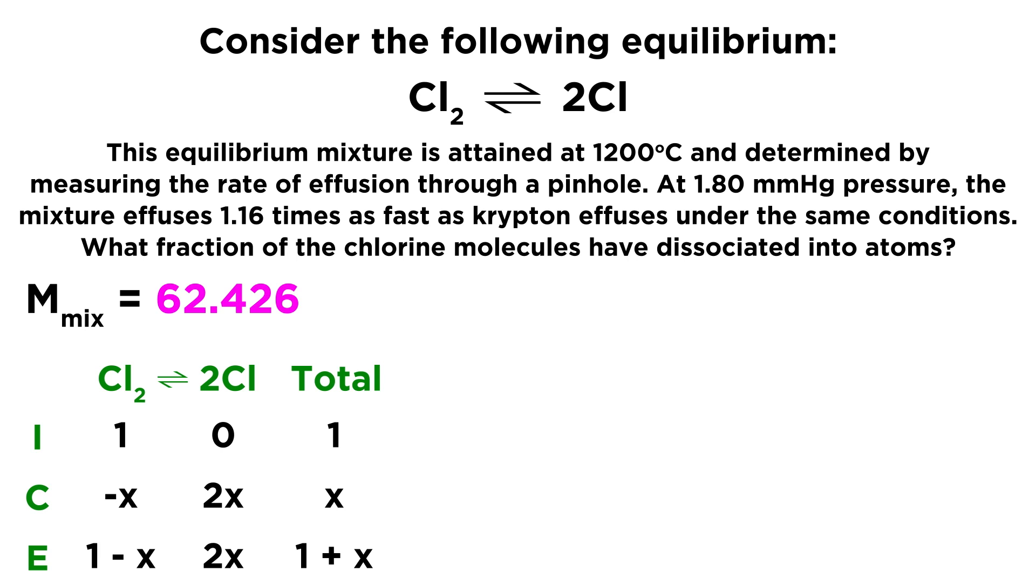So 0 plus 2x means the equilibrium value for chlorine radicals will be 2x. Now that means that our totals will be 1 for initial, x for the change, and then for our equilibrium, we will have 1 plus x, because 1 minus x plus 2x equals 1 plus x. That represents the total number of particles in the system, and those particles might be chlorine molecules, and they might be chlorine radicals, but in total, there is 1 plus x particles.